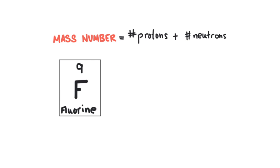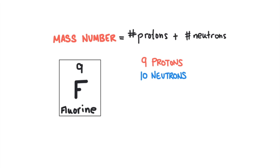The next number that describes an atom is called the mass number. The mass number tells us how much mass the atom has. Remember that electrons have a mass of zero amu, so only protons and neutrons give mass to the atom. The mass number is equal to the number of protons plus the number of neutrons. An atom of fluorine has nine protons and ten neutrons, so its mass number would be 19 amu.